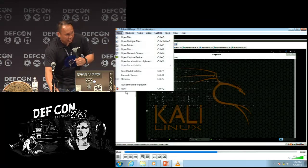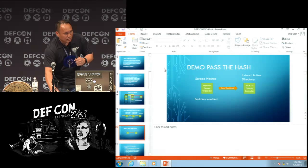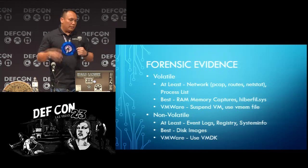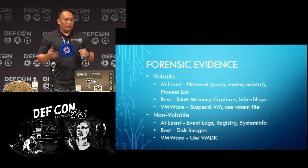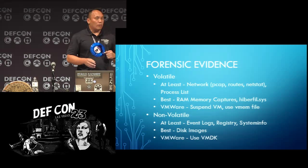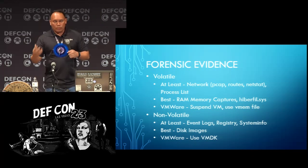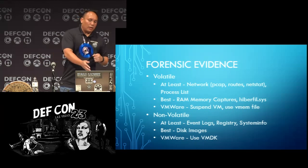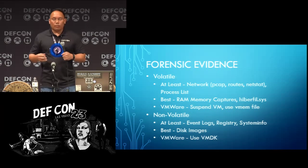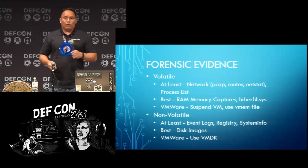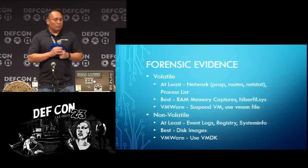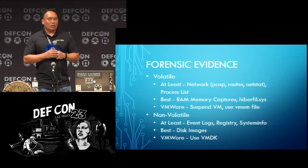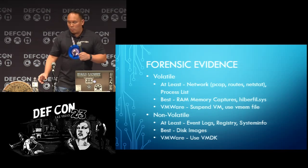I'm going to skip these videos because I can't see anything. So at this point, I'm just going to start talking about forensic evidence. There are two types: volatile and non-volatile evidence. Volatile stuff is when you turn off the PC, it's gone forever. At the very least, the best thing is grabbing the RAM, doing a RAM capture, or hibernating the box so you get a hiberfil.sys file. If it's a VMware image, you can actually suspend the VM and use the VM file. For non-volatile stuff, at the very least: event logs, registry, system info. Best — get a disk image. For VMware, just grab the VMDK.